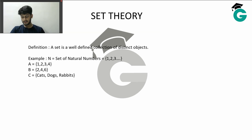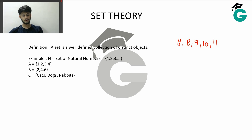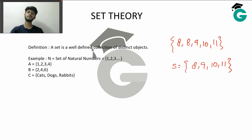What is a set? A set is a collection of distinct objects. Suppose you went to a game parlor and you scored these points: 8, 8, 9, 10, 11 across 5 games. The set of points you scored would be S = {8, 9, 10, 11} — we talk about distinct objects, so there is no repetition.